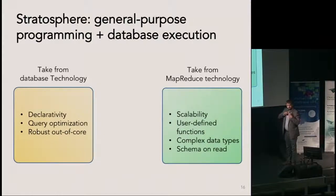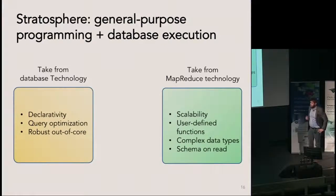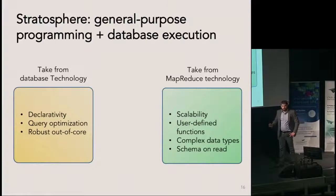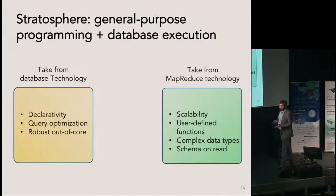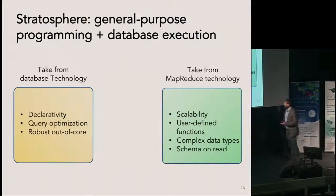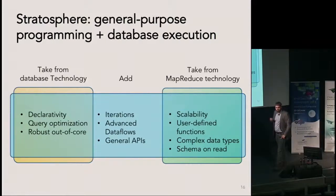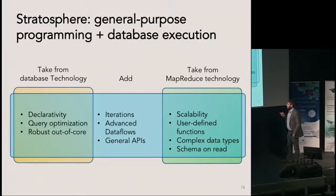What Stratosphere does at a very high level is take concepts from the database world and concepts from the MapReduce world. From databases: declarativity, query optimization, and out-of-core processing — the ability to gracefully spill to disk if main memory is not enough. From MapReduce: scalability, user-defined functions as first class citizens, complex data types, schema on read. On top of that, it adds the ability to natively do iterative processing, more advanced dataflows than MapReduce, and general typed APIs.